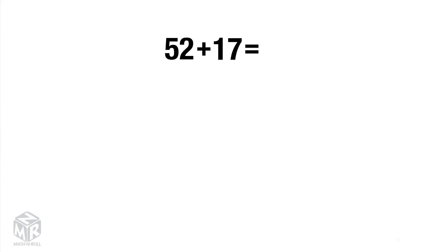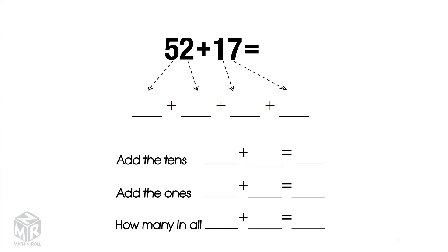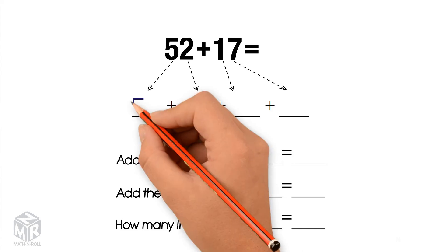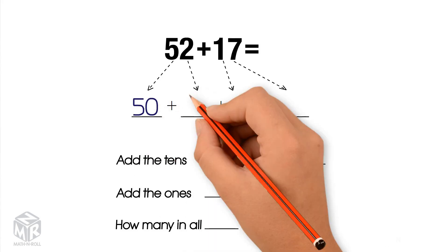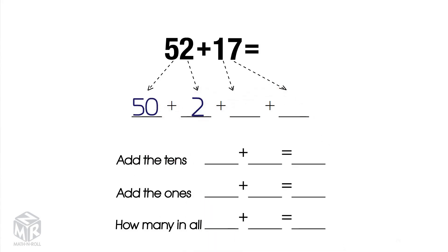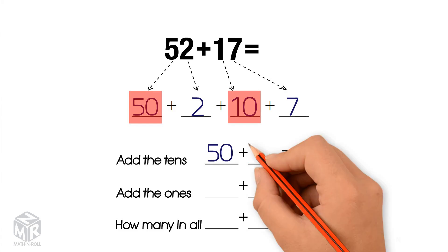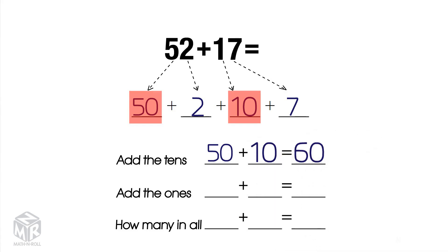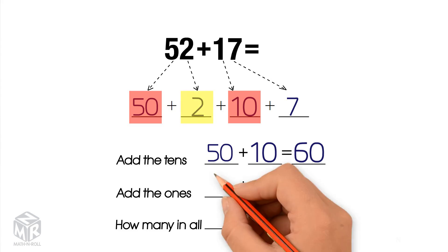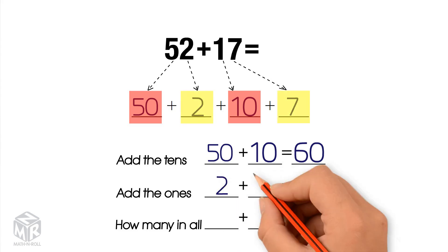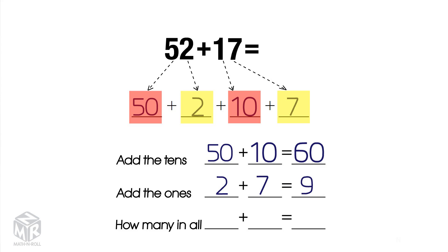Let's try another example: 52 plus 17. 52 breaks up into 50 and 2. 17 breaks up into 10 and 7. First, we add the tens: 50 plus 10 equals 60. Next, we add the ones: 2 plus 7 equals 9.